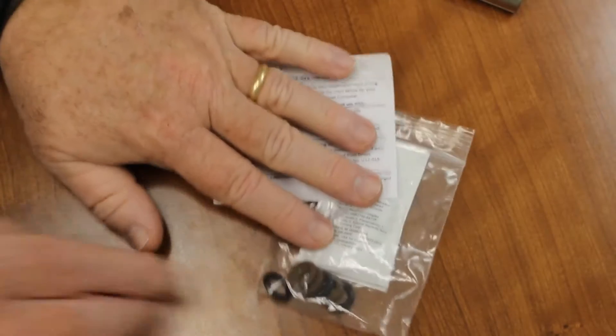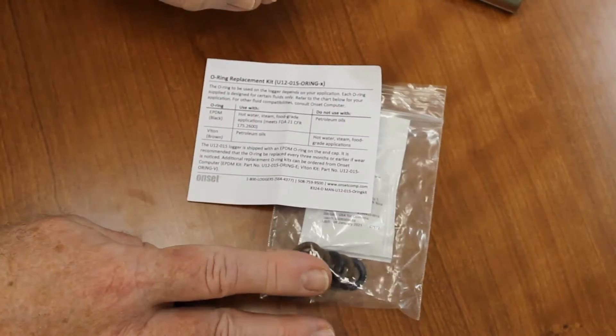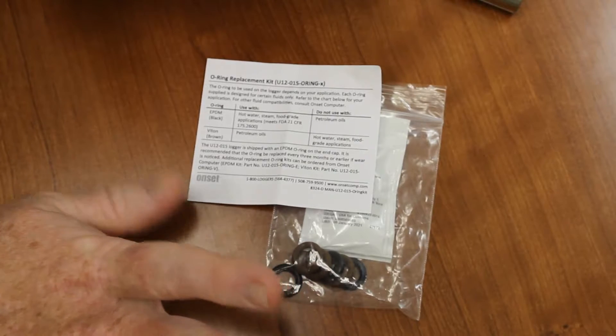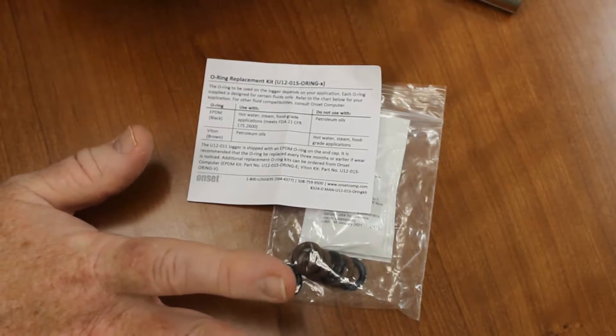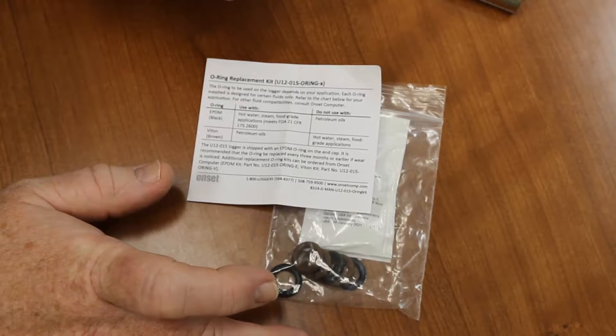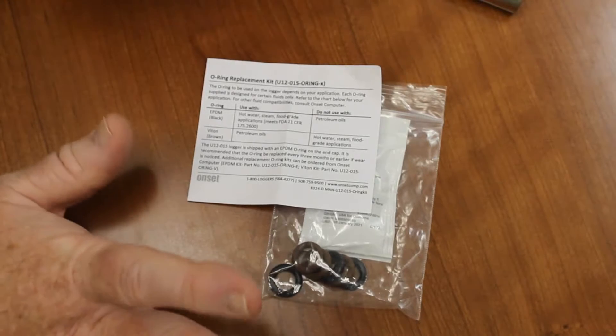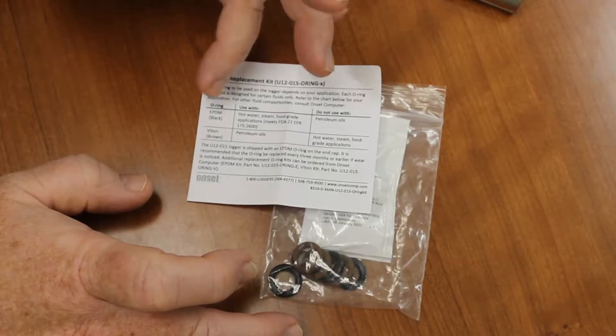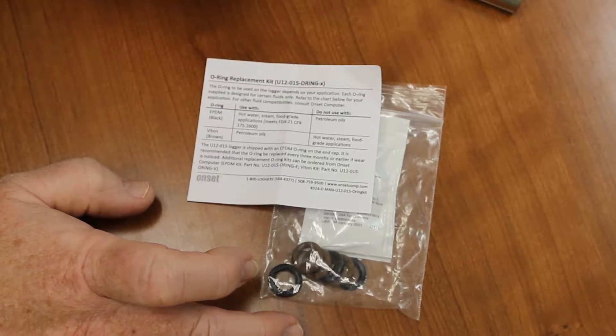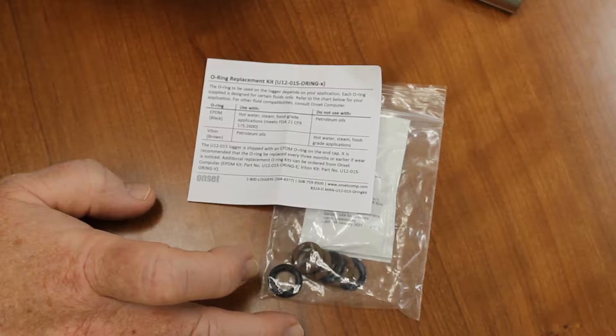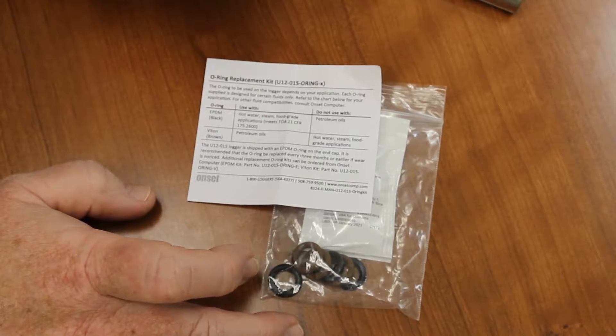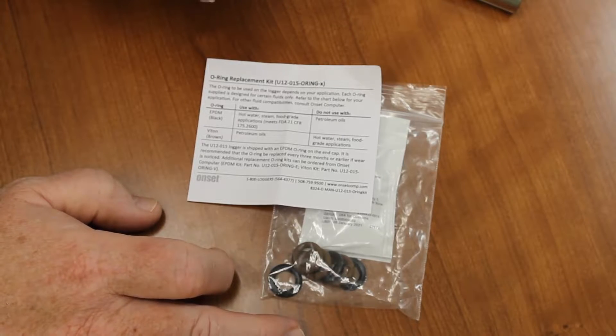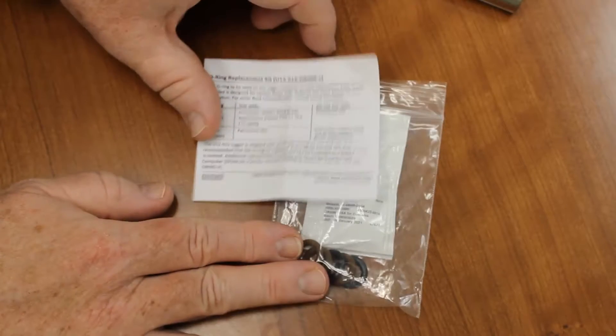The brown O-rings that you see in here, you would use if you were in a petroleum-type environment, if you were monitoring something where petroleum might be present. You don't want to use the EPDM O-ring where petroleum-based oils would be in contact with it. It will cause it to fail. You want to make sure that you're using the right type of O-ring.